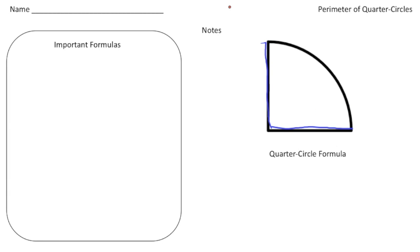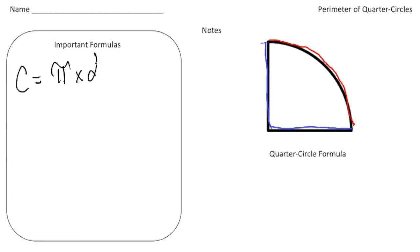I'm going to highlight that arc in red. To find the perimeter, which means the distance around, we need to add the radius, the radius, and then a quarter of the circumference. The key formulas we need are: circumference equals pi times the diameter, pi is 3.14, and twice the radius equals the diameter.